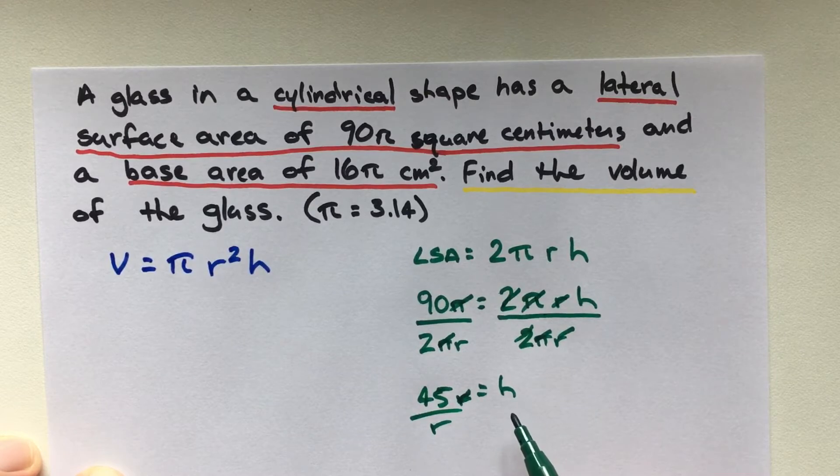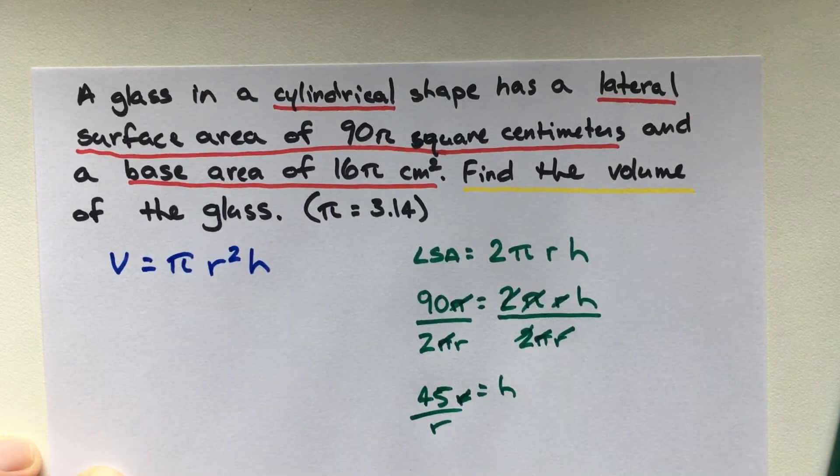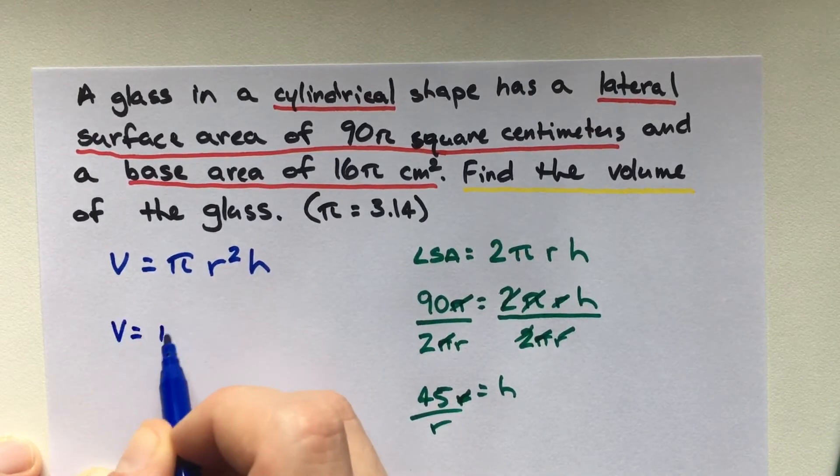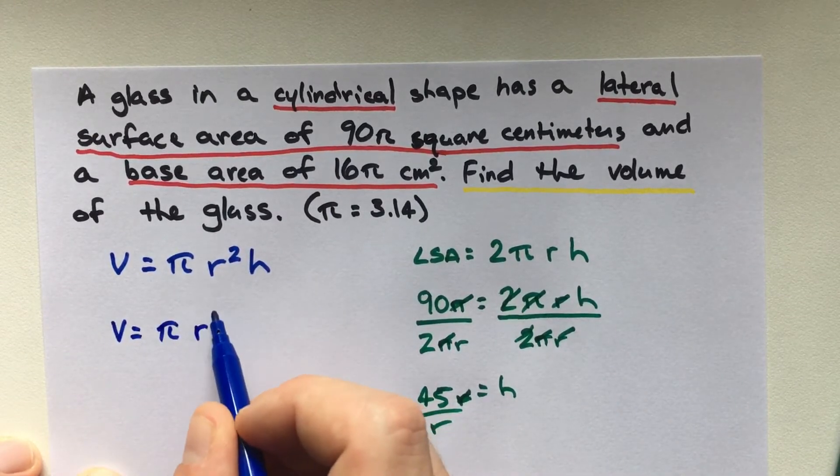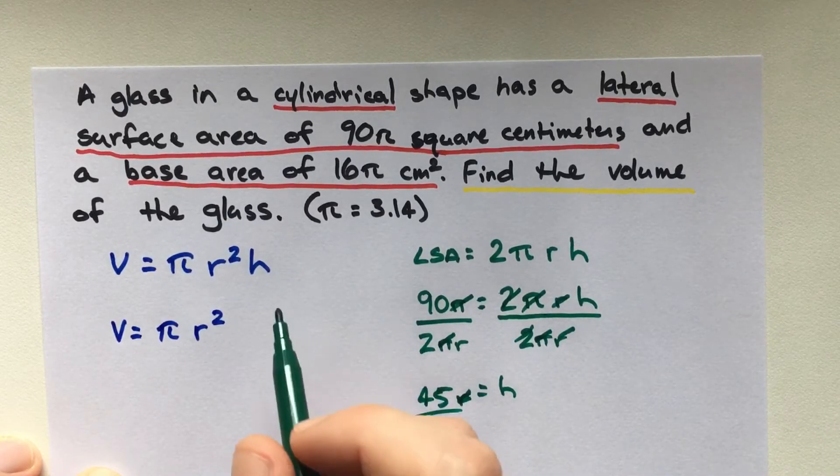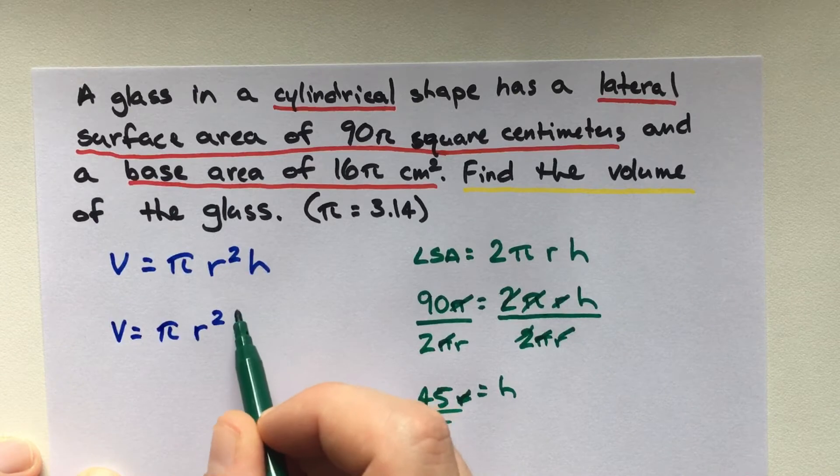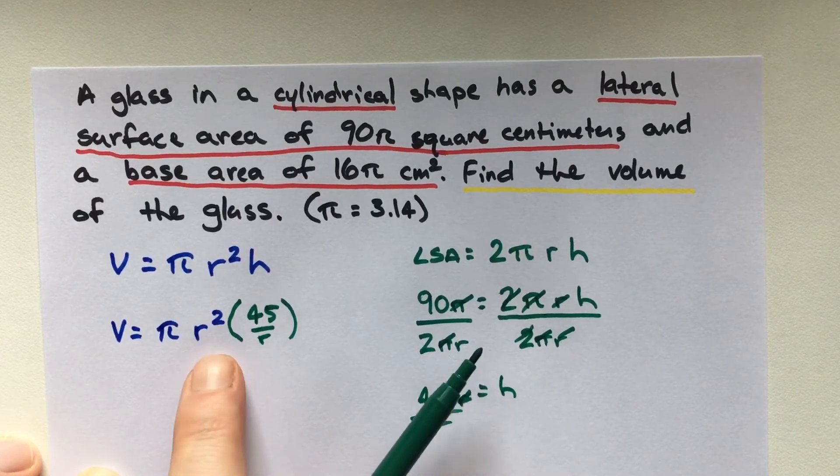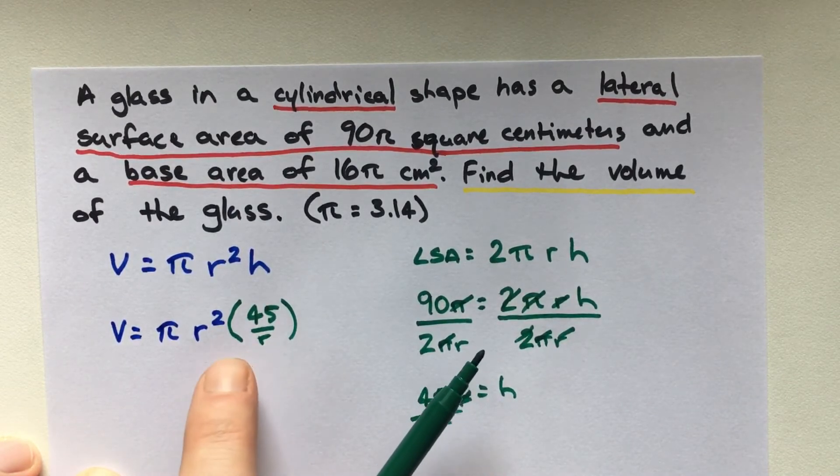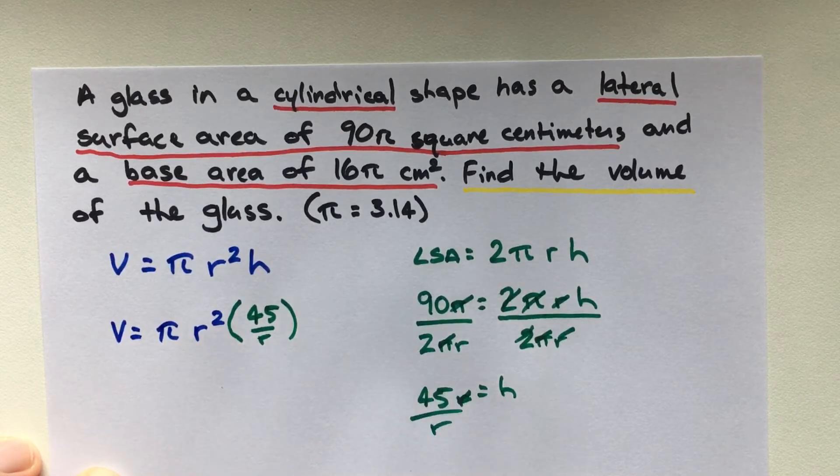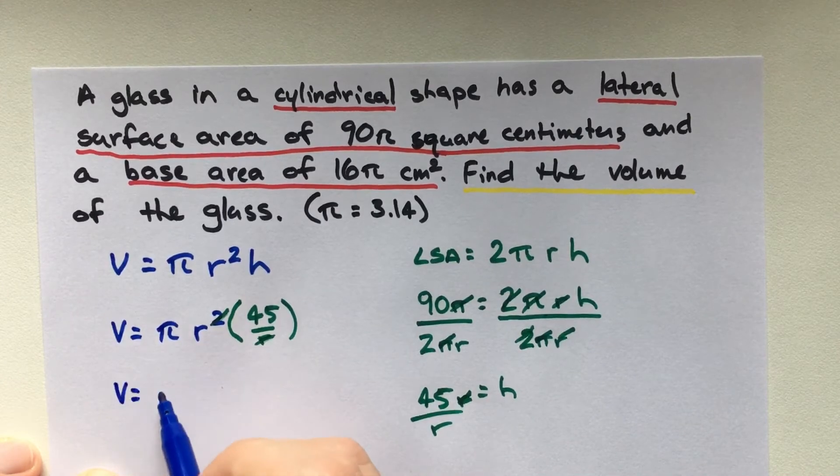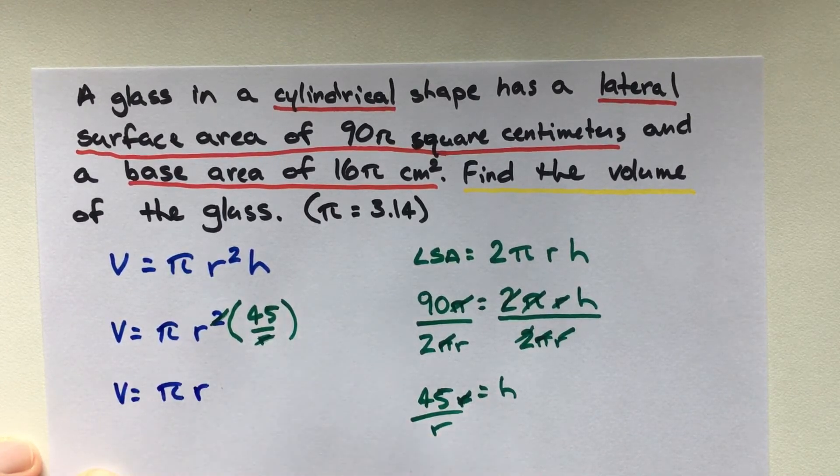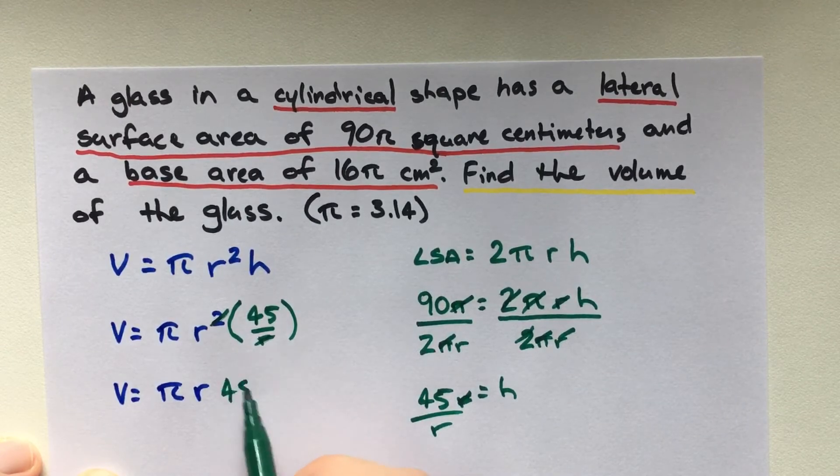So let's rewrite this over here by plugging in my h. So volume is equal to πr² times my height, which is 45 over r. Now, right away we can see, because we are multiplying by a fraction, this is going to end up being r² over r. So actually, the squared and the r are going to cancel. So we're only going to have one r on top. So let's rewrite one more time. Volume equals πr times 45.